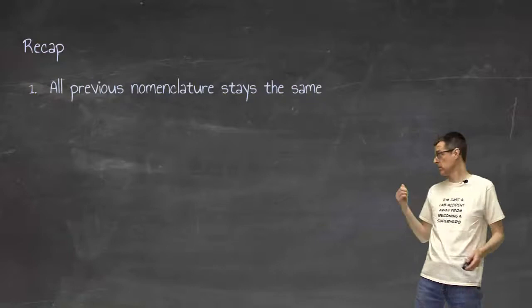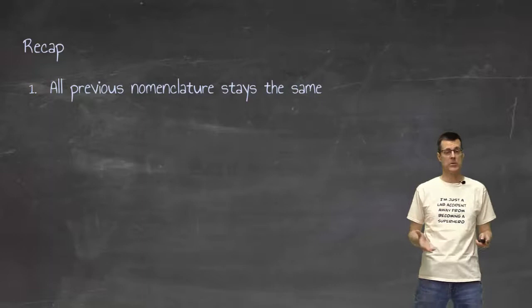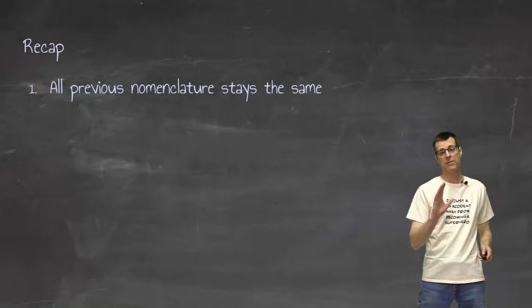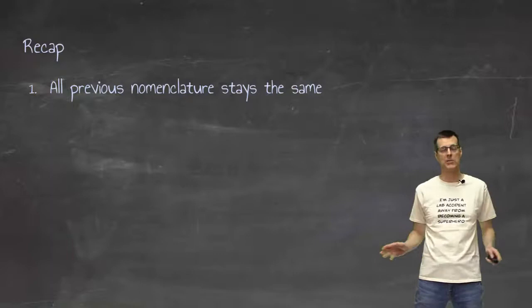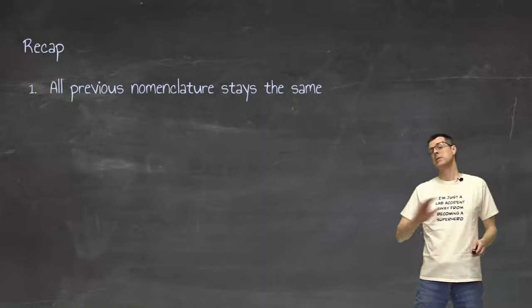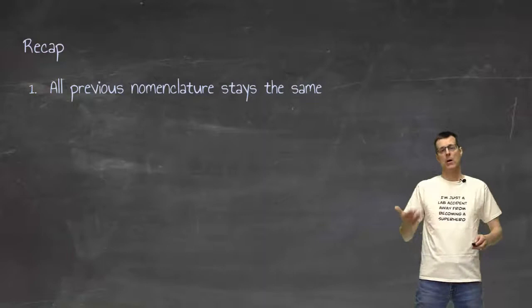Number one is all previous nomenclature stays the same. So as we do new nomenclature, it doesn't change any of the old stuff. So the very first thing we did in nomenclature was diatomic elements. Those will be diatomic elements to the end of time. Simple metal, nonmetal nomenclature will be done in that way until the end of time. All we're ever going to do is add new compounds to the list of things that we can actually do nomenclature for.